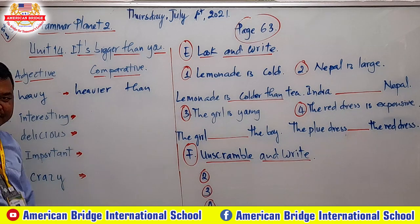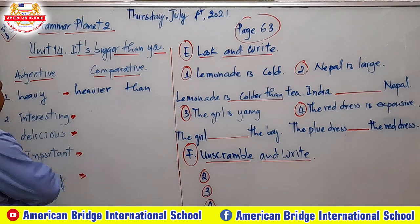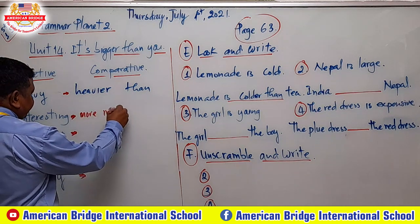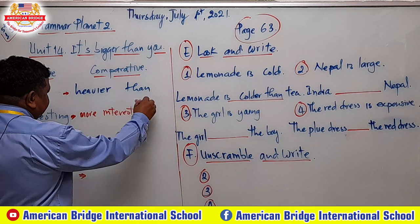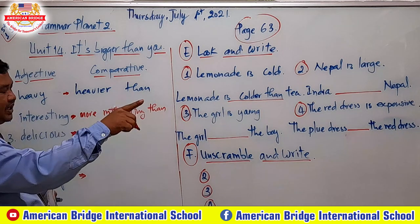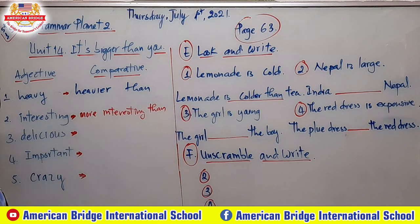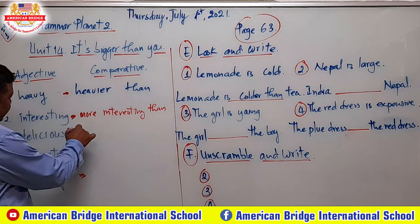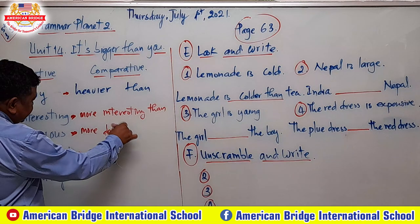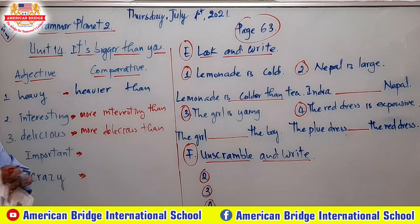Now the word 'interesting' — can you see? 'Interesting' has three syllables, so you have to add 'more': more interesting than. For example: 'This movie is more interesting than that movie.' Similarly, 'delicious' — you write 'more delicious than.' For example: 'This food is more delicious than that food.'